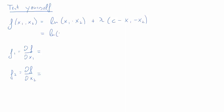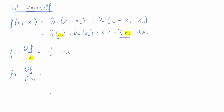The useful simplification is to recognise that log of x1 times x2 is the same as log of x1 plus log of x2. Then we further simplify by bringing lambda into the parenthesis. For the first partial derivative delta f over delta x1, only two of the five terms contribute: the derivative of log x1 is 1 over x1, and the derivative of negative lambda times x1 is just negative lambda. So f1 equals 1 over x1 minus lambda.